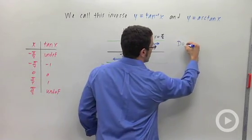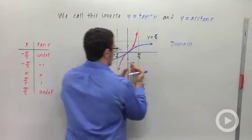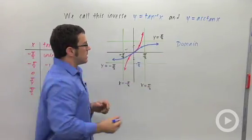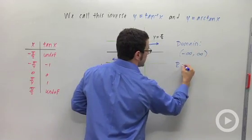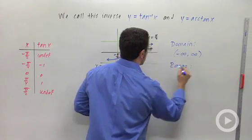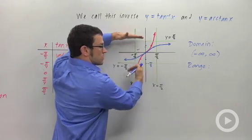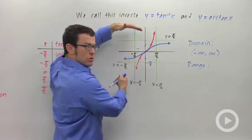You can probably tell by looking at the graph that the domain is going to be all real numbers. So inverse tangent can take all real numbers. And the range, you're restricted to between negative pi over 2 and pi over 2.